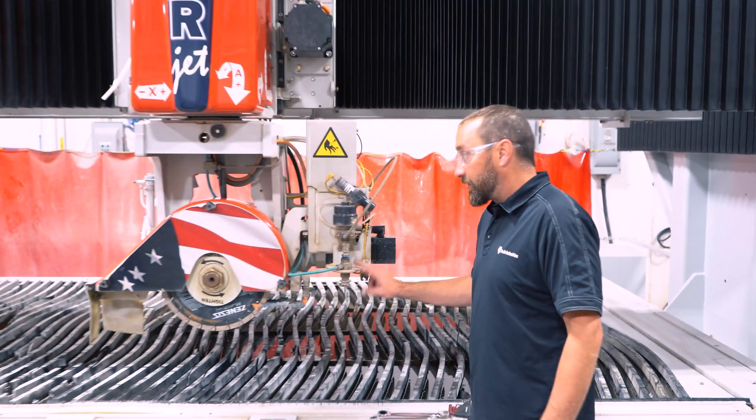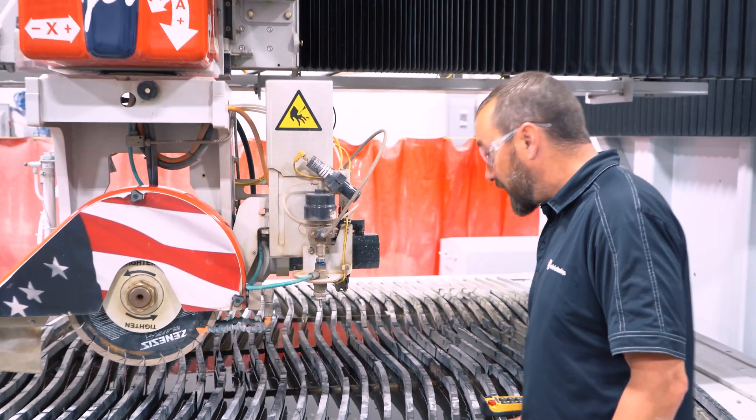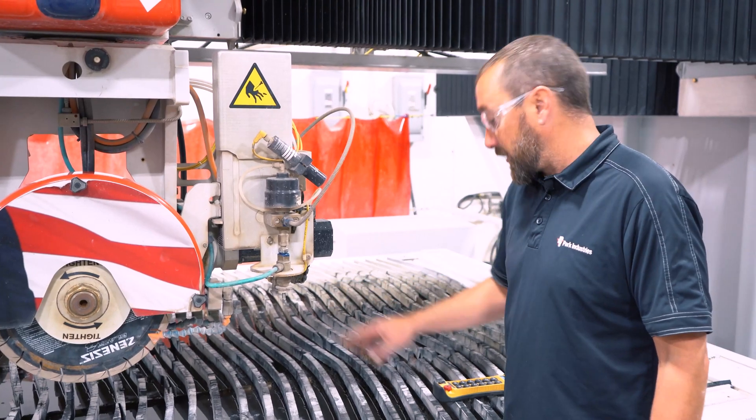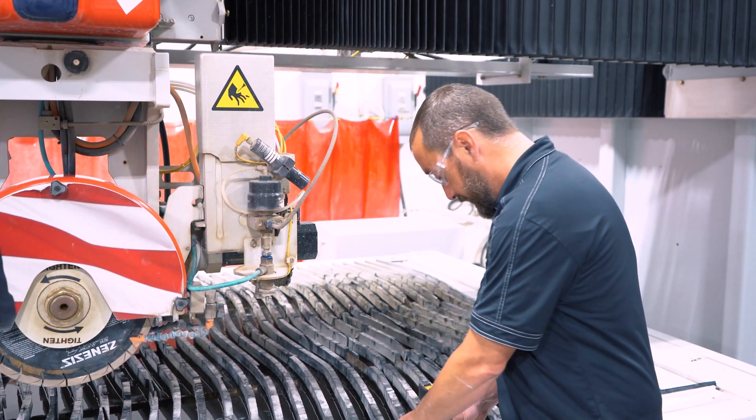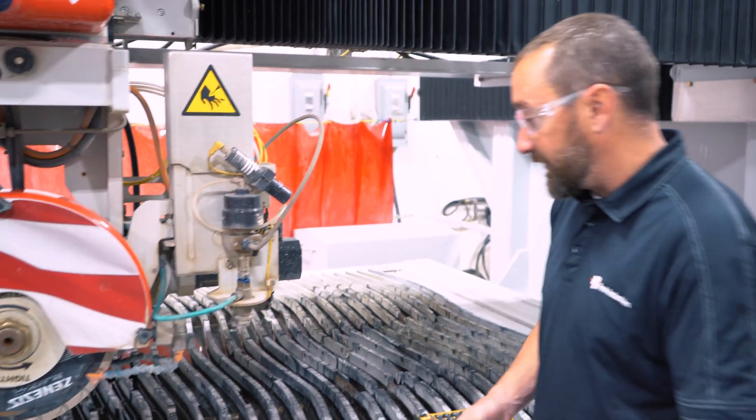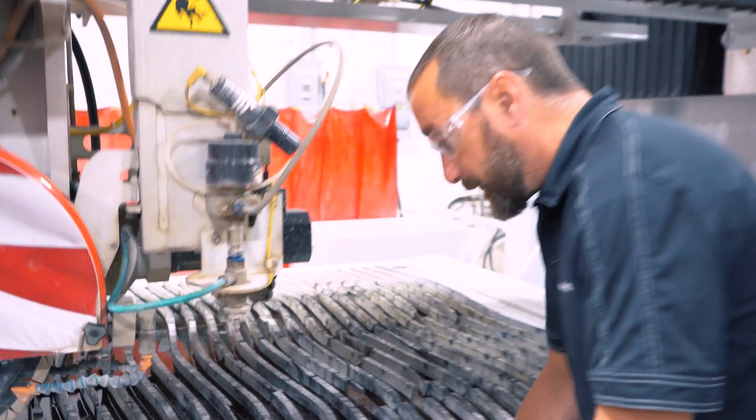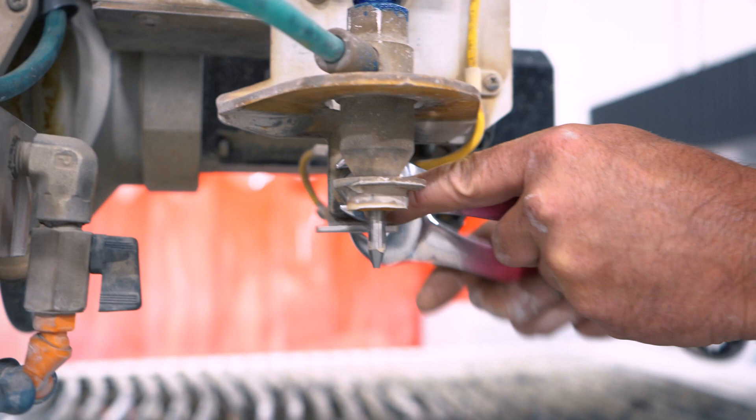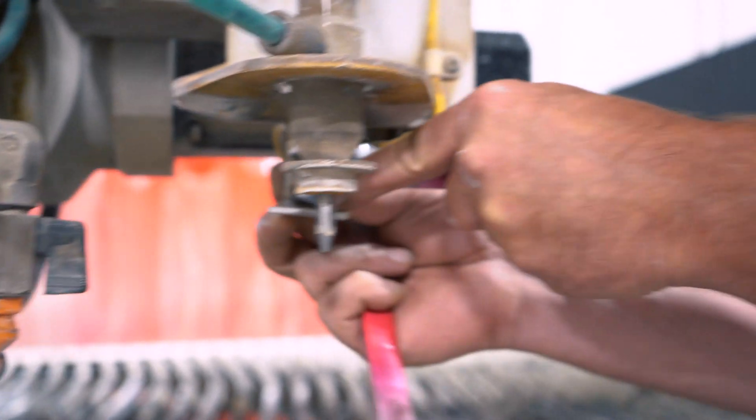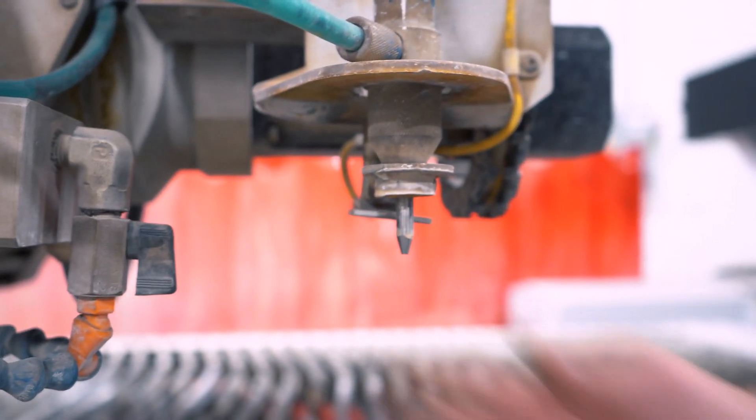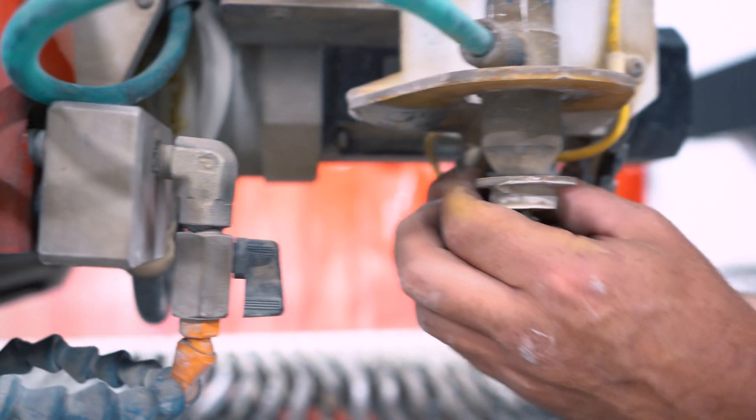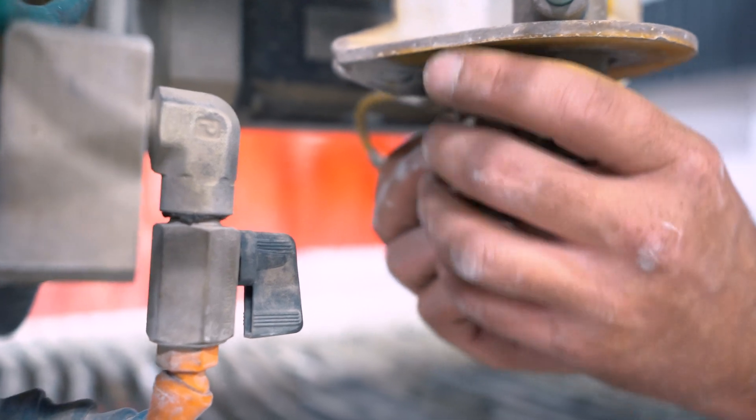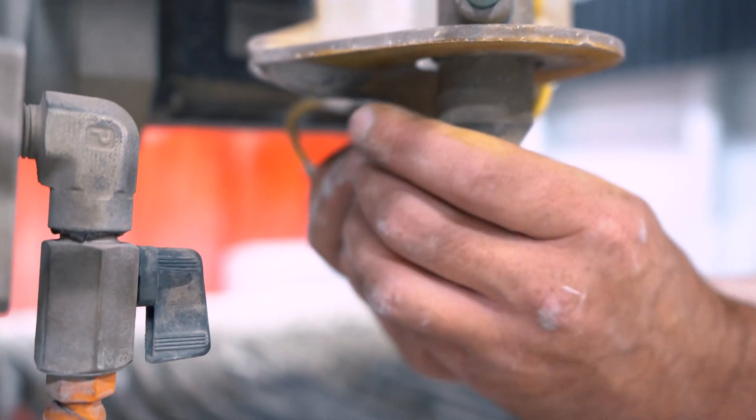So we're going to do a nozzle replacement on a Sabrejet XP here and it'll be same concept for fusions or any other water jet we have. Some of the parts may differ a little bit there. First, we want to take loose the nozzle broken prox. I did break this loose already here. This is the proximity sensor that reads if your nozzle breaks off so it will stop the machine and not keep running.